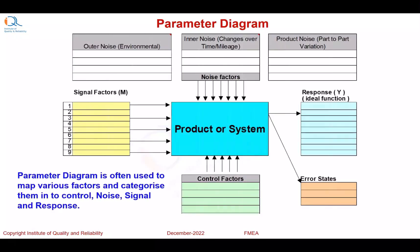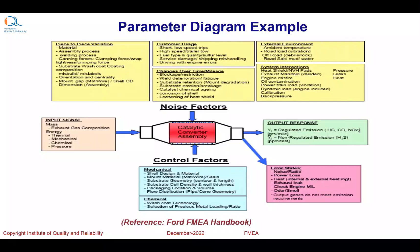A parameter diagram is another tool often used to map and categorize various factors into control, noise, signal, and response factors. Here is an example of a parameter diagram from the Ford FMEA handbook. We will not go into the details of parameter diagram, but those interested can look at these details in the diagram and the Ford FMEA manual.